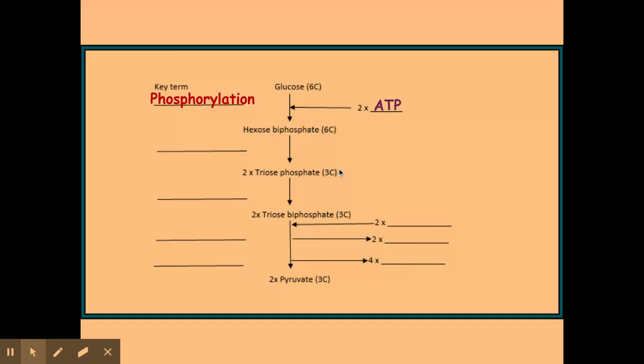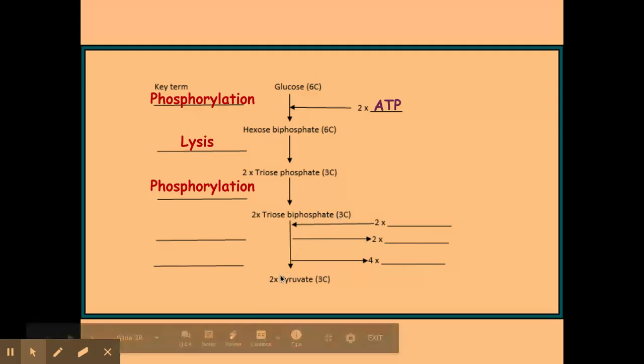And my two lots of triose phosphate are then changed into two lots of triose bisphosphate, again through phosphorylation. However, this bit here does not use ATP. It just uses inorganic phosphates that are present within the cytoplasm of the cell. The next thing that happens is my two lots of triose bisphosphate will then change into two lots of pyruvate by several different things going on here.